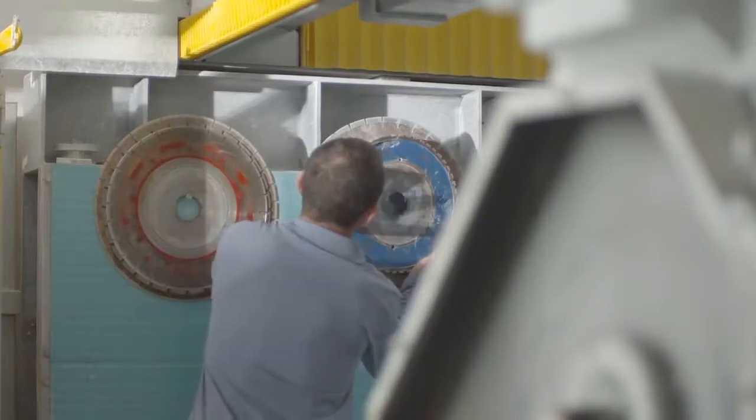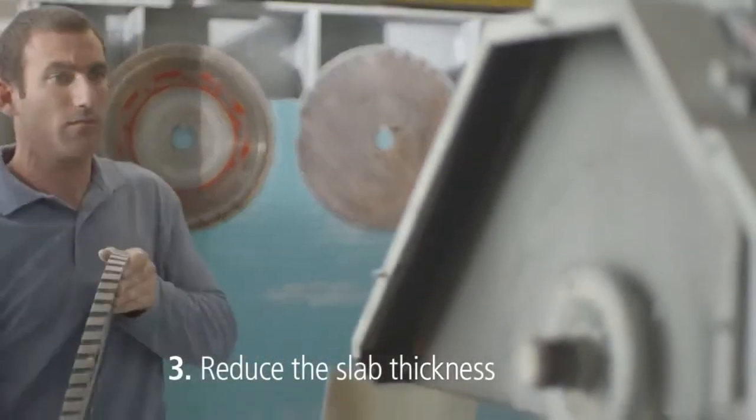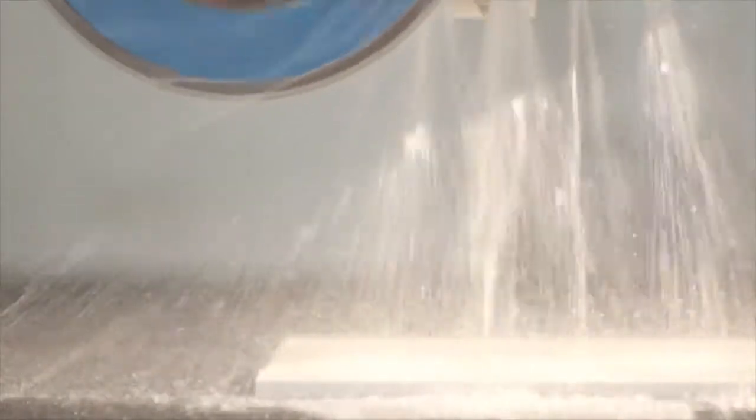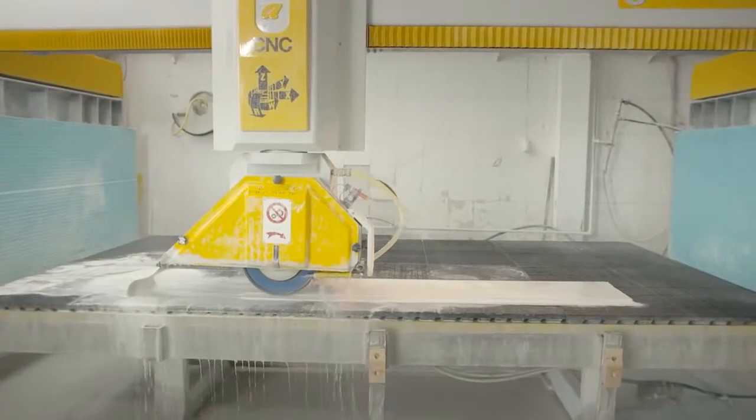Once you have the correct dimensions, reduce the slab thickness. We're using a CNC machine with a grinding wheel because it is suitable for wider pieces. The thickness to which you reduce the Caesarstone depends on the radius you want to achieve.